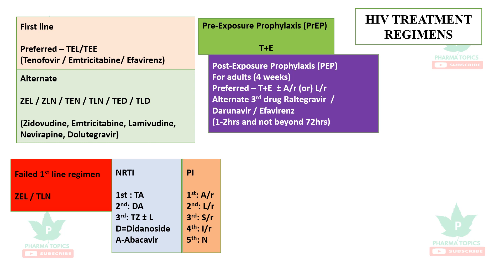Post-exposure prophylaxis is given when a person is exposed to blood, secretions, or sexual contact with an infected person. For adults, treatment is given for four weeks. The preferred regimen is tenofovir with emtricitabine along with atazanavir/ritonavir or lopinavir/ritonavir. Integrase inhibitors may also be added.